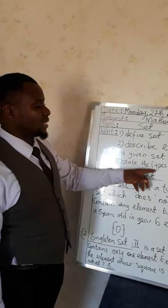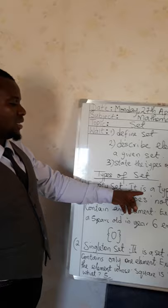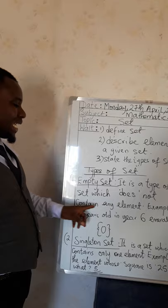The types of sets. Number 1: Empty set. It is a type of set which does not contain any elements.